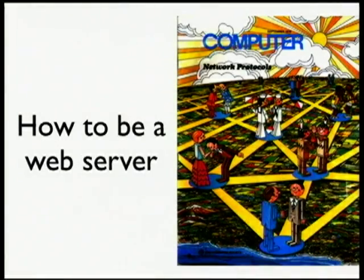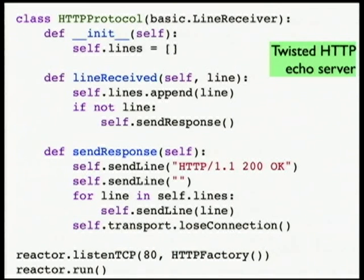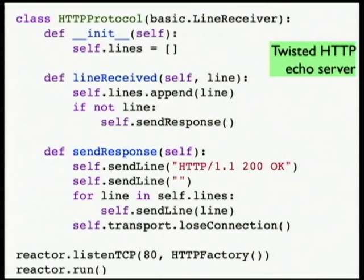Being a web client is super easy using Telnet. How about being a web server? This is also really easy in Python. There are a lot of ways to do this, but a way I like is using a library called Twisted. Twisted makes it very easy to build clients and servers for a variety of networking protocols. This is 95% of an actual web server you could run that would listen to and respond to HTTP requests — it wouldn't respond very interestingly, all it does is echo back what you asked it, but you could absolutely run this on a server and clients could connect to it.